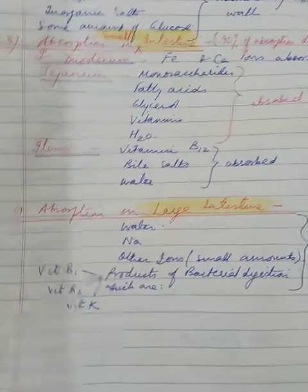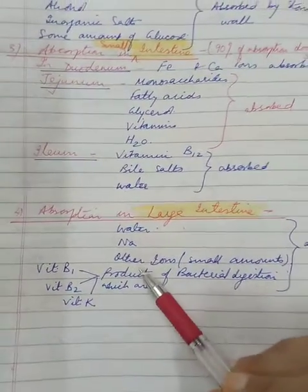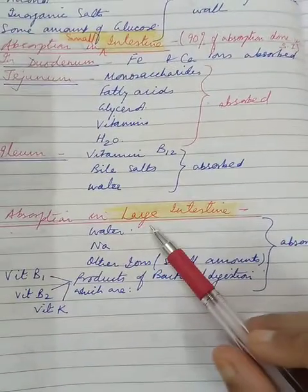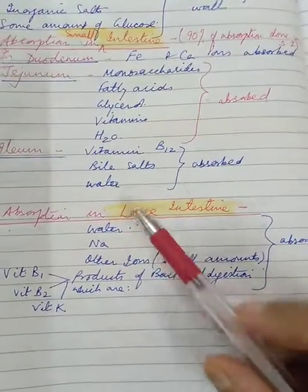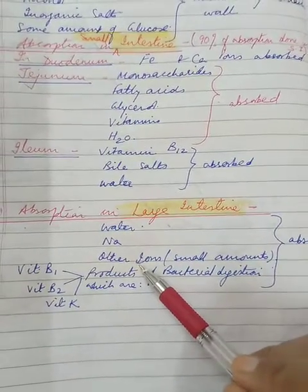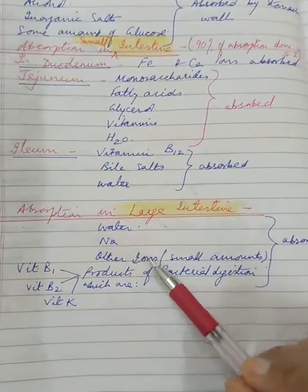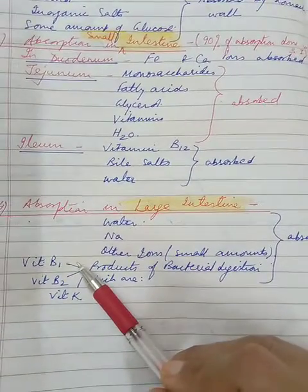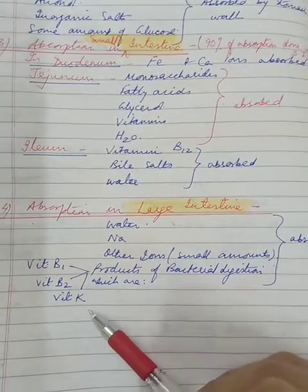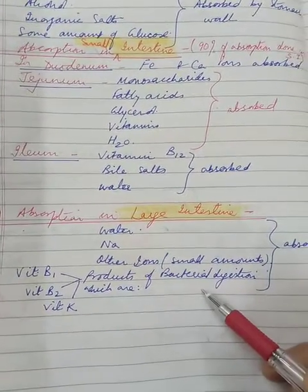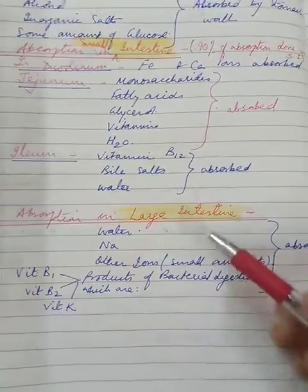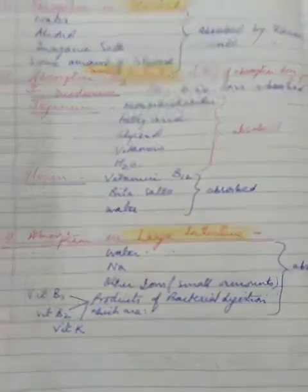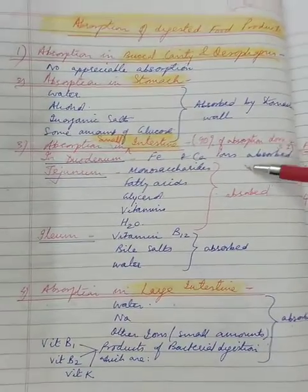Now the food reaches the large intestine. Here some absorption occurs in large intestine. Mostly it is water, then sodium, small amounts of other ions and the products of bacterial digestion which are vitamin B1, vitamin B2 and K. They are all absorbed in the large intestine. And then after this, the undigested food is converted into feces. So this is the summary of absorption.